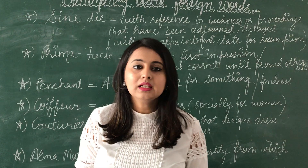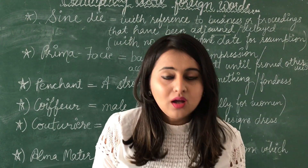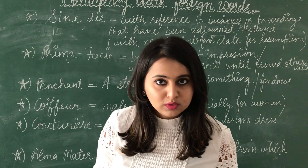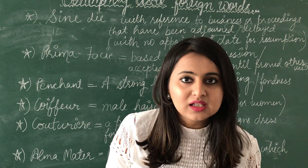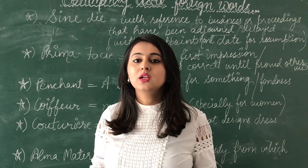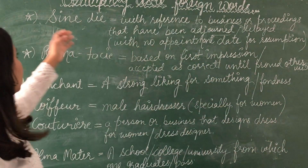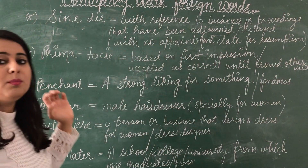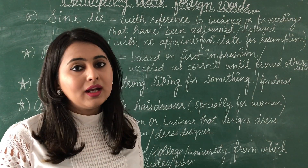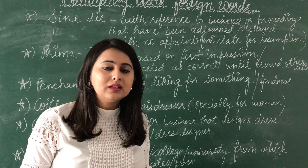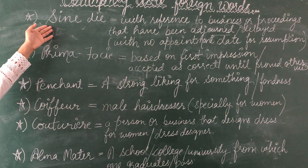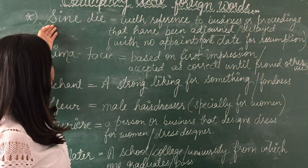Let's do a quick revision. The first word was 'faux pas', the second was 'in toto', the third was 'impromptu', the fourth was 'tête-à-tête', and the fifth was 'rendezvous'. So let's start with the sixth word. Please go check the video and do not forget to learn them and write them down in your notebook, as they are very important from any competitive exam's point of view.